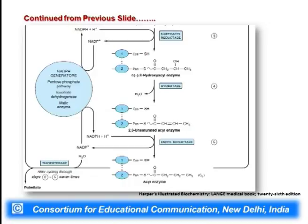The acyl enzyme complex increases in length by two carbons with each cycle. This cycle continues for seven times, after which a C16 carbon molecule is formed and cleaved from the multi-enzyme complex by the thioesterase enzyme, yielding free palmitic acid for synthesis or energy storage. The ACP plays a crucial role as the carrier molecule, passing the substrate from one enzyme to the next throughout the biosynthesis.